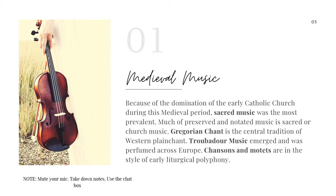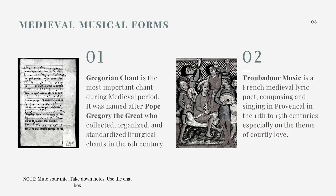There is also what we call troubadour music that emerged and was performed across Europe. Chansons and motets are also a style from the medieval period, during the time of early liturgical polyphony. There are three kinds of music created during the medieval period: first, the Gregorian chant; second, the troubadour music; and lastly, chansons and motets.